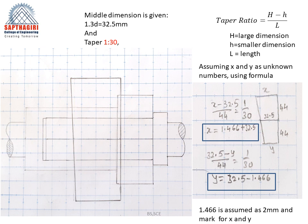The middle dimension is 1.3d, that is 32.5 mm. The taper ratio is calculated as: (H minus h) divided by L — that is, the larger dimension minus the smaller dimension divided by the length. Assuming x as the larger and y as the smaller dimension: y equals 32.5 minus 1.46, and x equals 32.5 plus 1.46. The difference is approximately 1.466, which can be assumed as 2 mm. From the center, mark 2 mm to the left and 2 mm to the right at the point where 32.5 ends, then complete the tapered line.